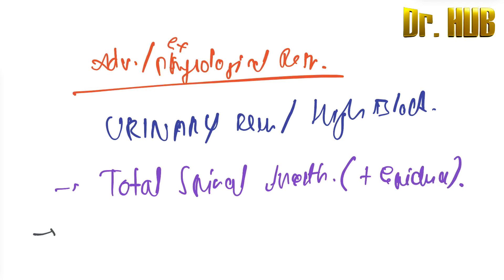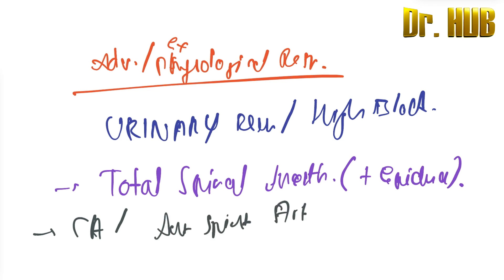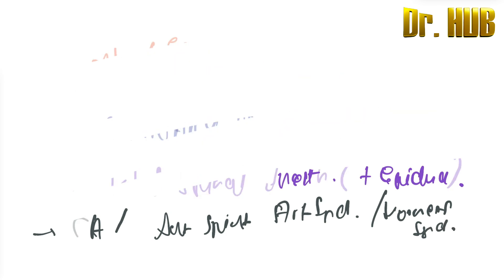There is also the presence of cardiac arrest (CA), and there can be anterior spinal artery syndrome. Additionally, there is the presence of Horner syndrome. All of these are adverse effects or exaggerated physiological responses.